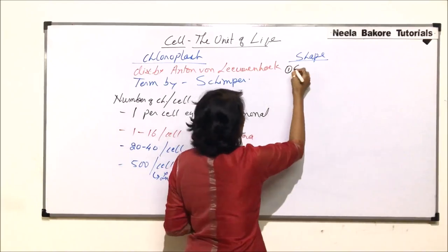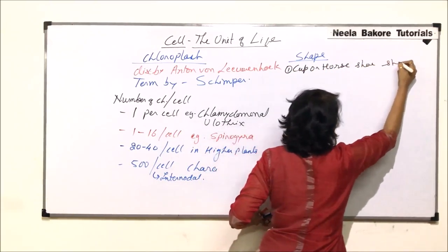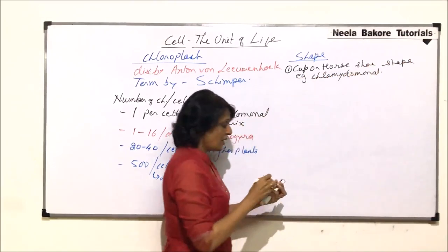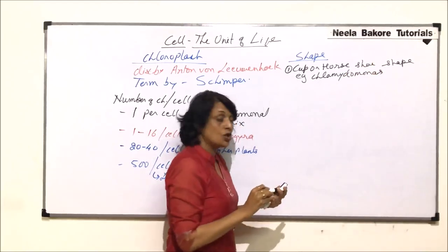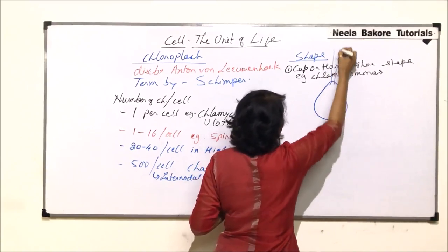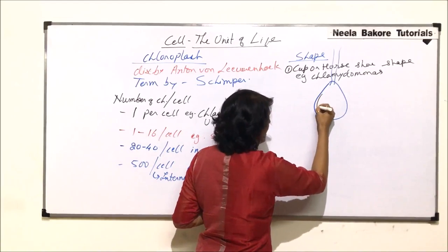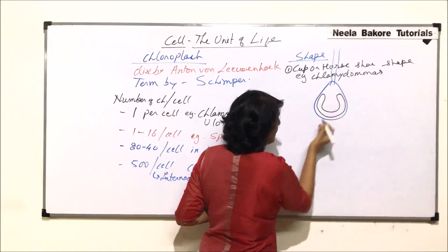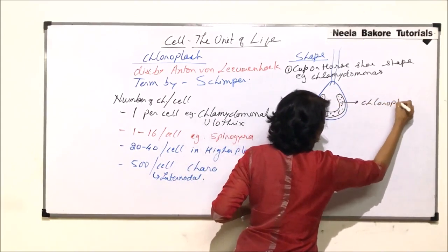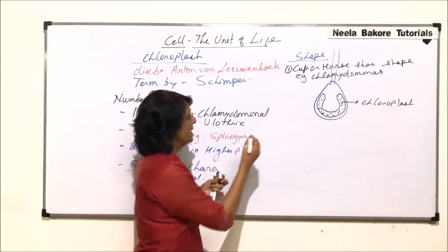The first shape is called cup shape or horseshoe shape, and this is found in Chlamydomonas, which is a green alga. Chlamydomonas is a biflagellate green alga and it has only one chloroplast. The chloroplast is large and it is cup-shaped. This shape is written as cup shape or sometimes also known as horseshoe shape.